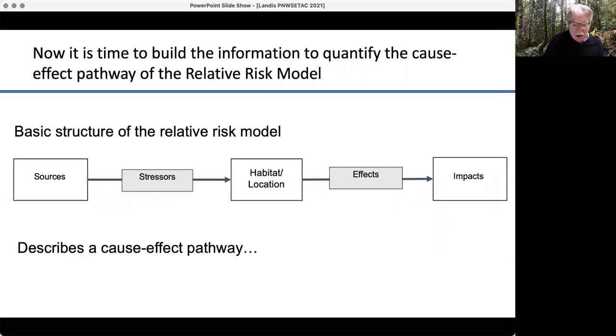We use the relative risk model and it's a very straightforward causal pathway. We have sources, which are the origins of the stressors, that get into the environment and go to a specific habitat location, where they interact with the organisms that we have an interest in, that are endpoints.